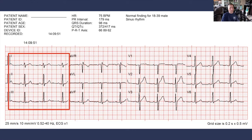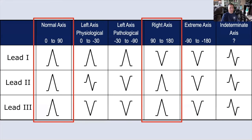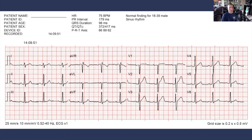Similarly, using leads I, II, and III, we're not really sure if lead I is positive or negative. So we would know we're either normal or slightly right axis, because our axis is literally right at 90 degrees in this example — the border zone. This is why I encourage everybody to know multiple methods for axis determination, because you use all three all the time.